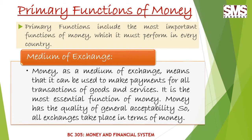Money as a medium of exchange can be served by anything that is generally acceptable by people in exchange for goods and services. Money is often referred to as generalized purchasing power, which emphasizes the freedom of choice that the use of money offers. The owner of goods and services need not secure their supplies from the people to whom they are trading. They can use money to buy the things they want most from people who offer the best bargain.